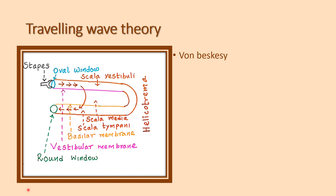When the stapes is hit on the oval window, it moves the perilymph in the scala vestibuli. It does not reach the helicotrema and it does not pass through the scala tympani to the round window.